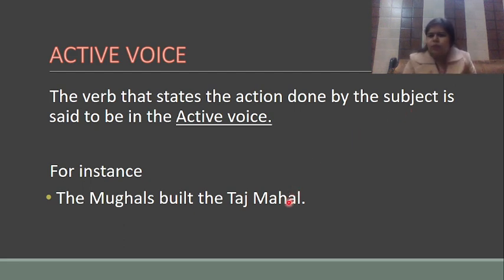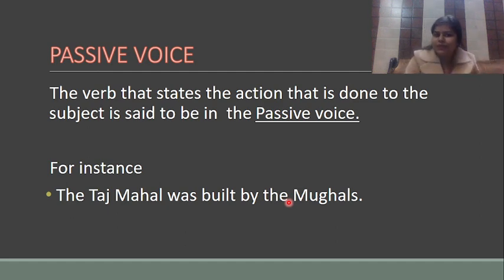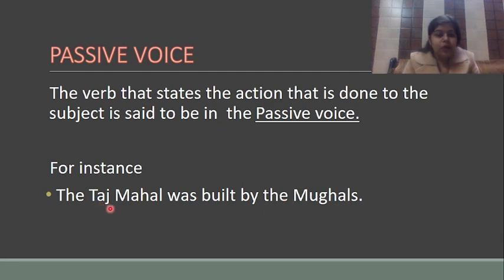Now we can convey the same thing in another way — the action that is done to the subject. For instance, 'The Taj Mahal was built by the Mughals.' The same thing is conveyed in a different manner. So these are the two definitions — action done by the subject versus action done to the subject.